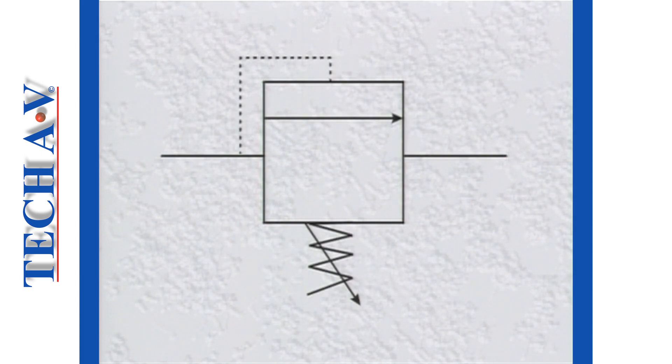If we consider our pressure relief valve, it will be represented like this. Let's look at each feature in turn. The arrow within the envelope indicates the direction of oil flow during operation.